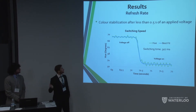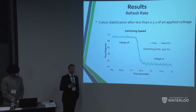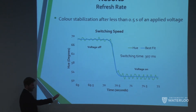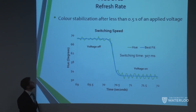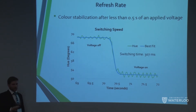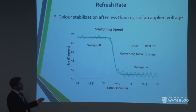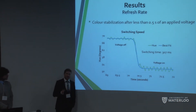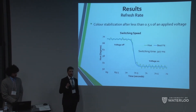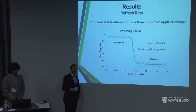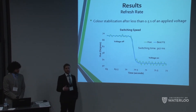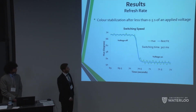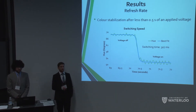We also tested the refresh rate — how quickly can we change the color when we change the voltage. A three-second snapshot shows we went from voltage off to 120 volts and got a switching time of approximately 0.3 seconds. We feel this is an inaccurate representation because our voltage source uses a dial that had to be manually turned. If we had a voltage source that could instantaneously change the voltage, the switching time would be significantly smaller.